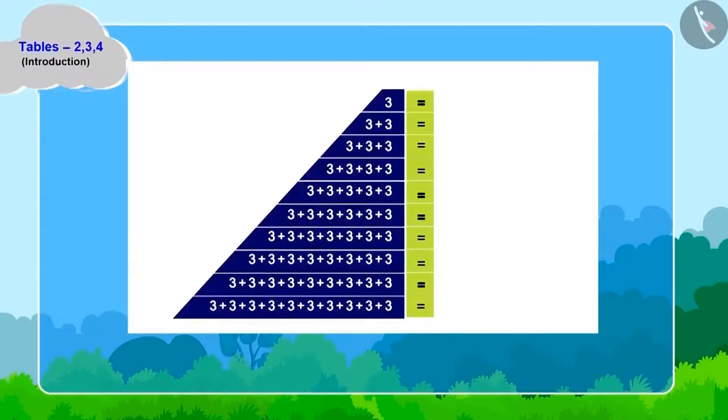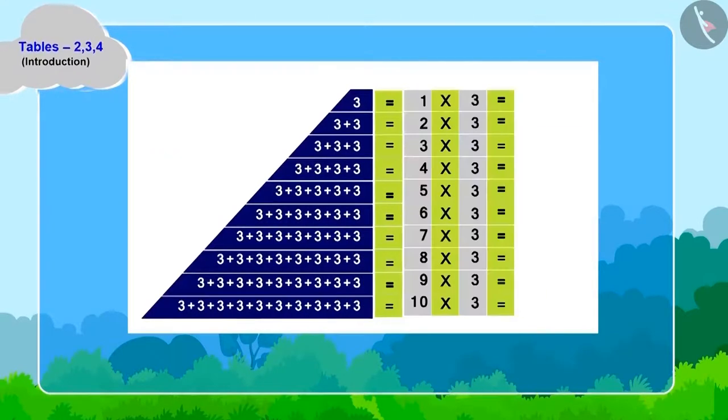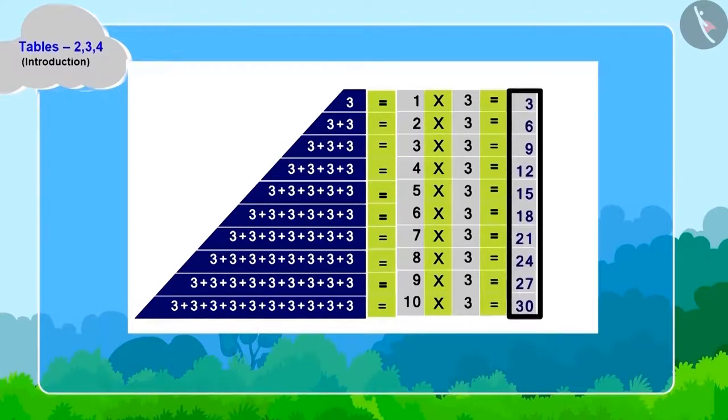And children, now if we write it in the form of multiplication, then what will we get? Absolutely right! The table of three!